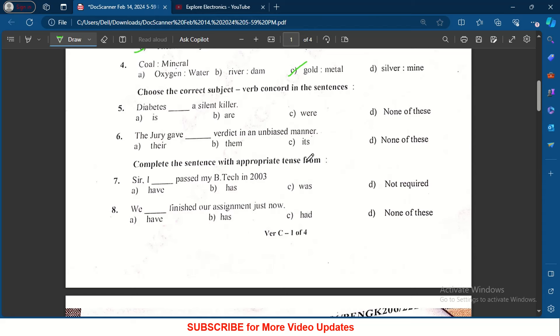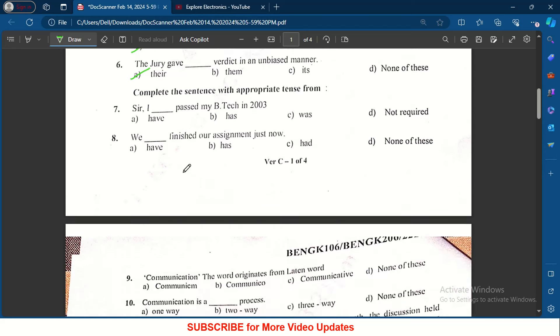Choose the correct subject verb conquered in the sentences: diabetes is a silent killer. The jury gave dash verdict in an unbiased manner - their verdict. Complete the sentence with appropriate tense form: sir I dash passed my BTEC in 2003 - I have passed.